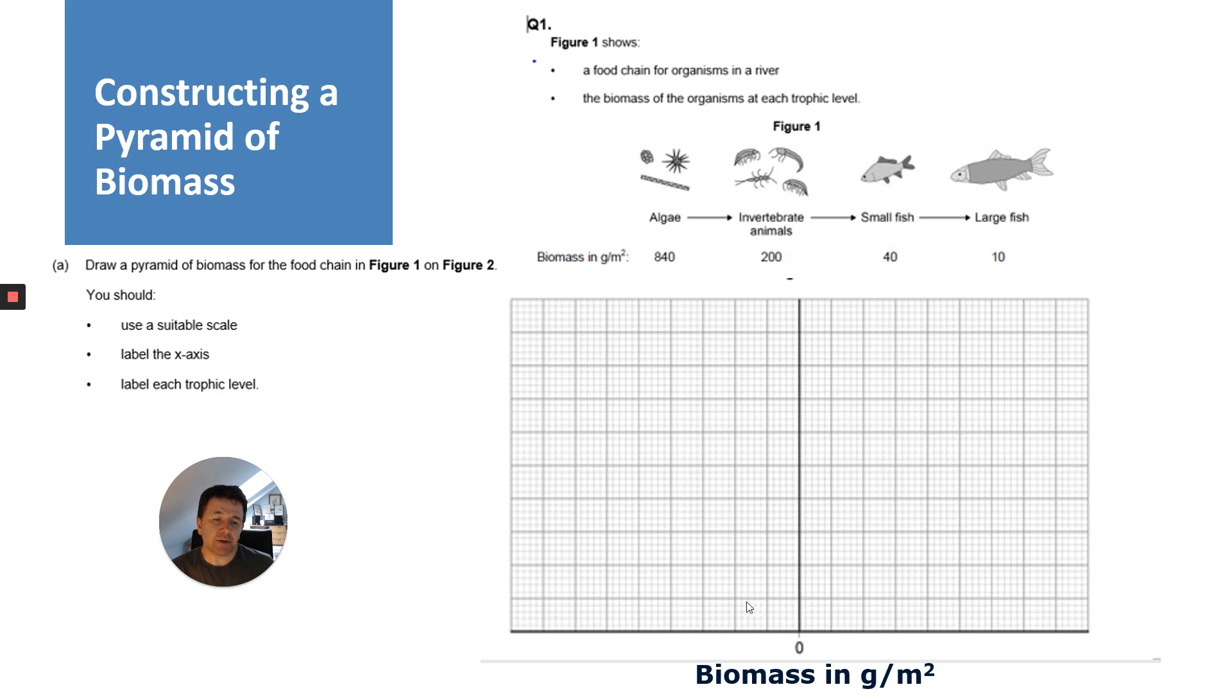I need to work out a scale that will fit. I also need to take into account that I've got some smaller numbers the higher up I go in terms of the trophic levels. What I've decided to do is make each large square 50.